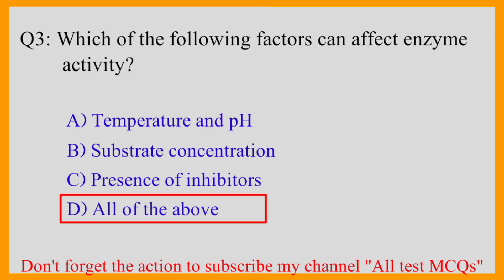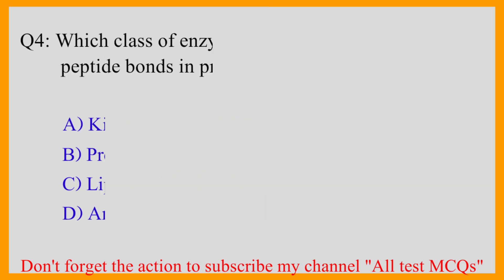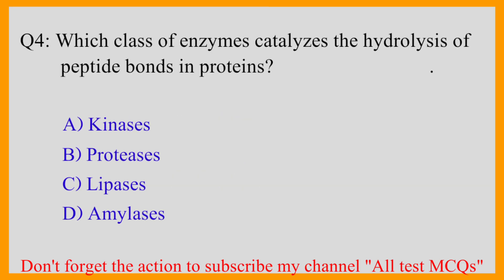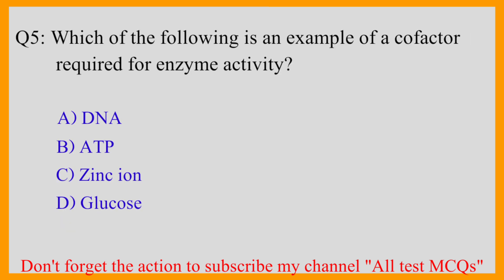Question number four: Which class of enzymes catalyze the hydrolysis of peptide bonds in proteins? The correct answer is option B — proteases. Question number five: Which of the following is an example of a cofactor required for enzyme activity?